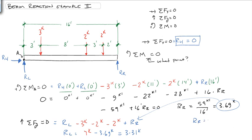And that's equal to 3.31 kips. So RR is 3.69 kips, RL is 3.31 kips.